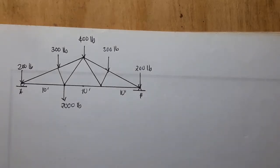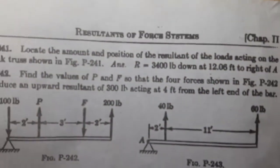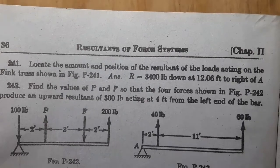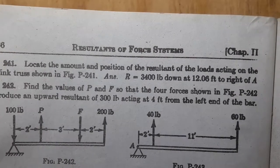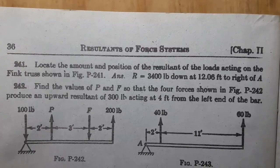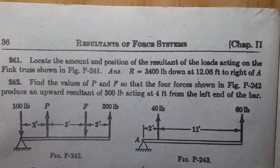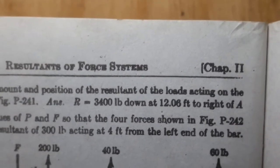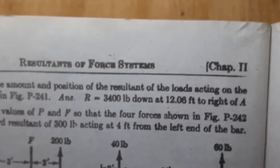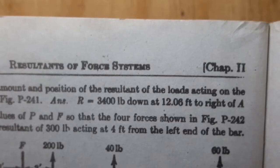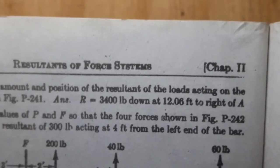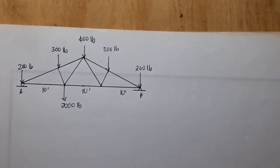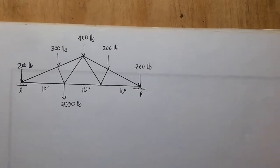Problem 241 states: locate the amount and position of the resultant of the loads acting on the Fink truss shown in figure P-241. The book already gives us the answer, which is three thousand four hundred pounds down at twelve point zero six feet to the right of A.